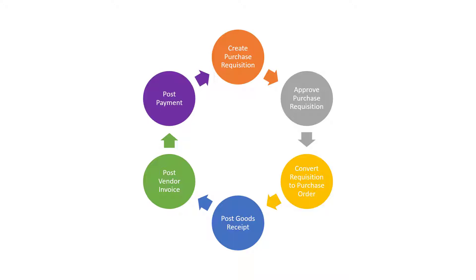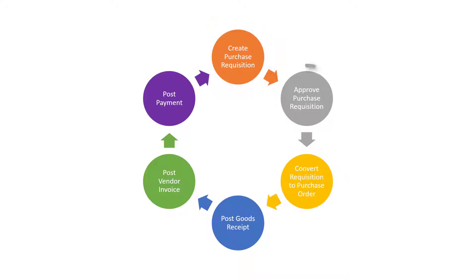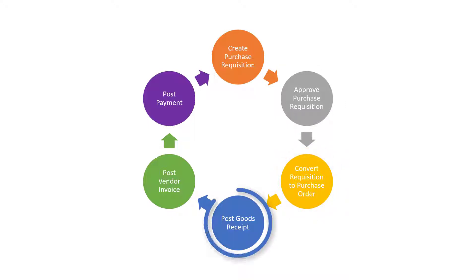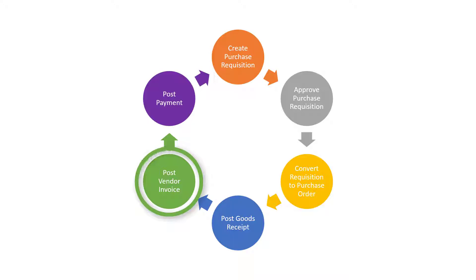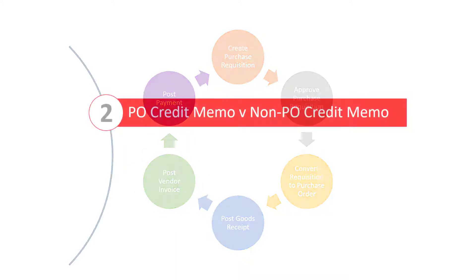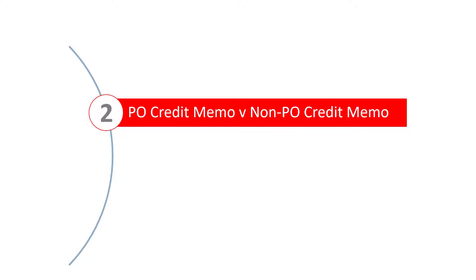A PO credit note references a purchase order, so the procurement steps in the Procure2Pay process — Create Purchase Requisition, Approve Purchase Requisition, Convert Purchase Requisition to Purchase Order, and Post Goods Receipt — should have already been completed, as is the case in this example. Transaction Miro sits within the Post Vendor Invoice step and is completed by the Accounts Payable Department. We've now established where Transaction Miro fits in the Procure2Pay process.